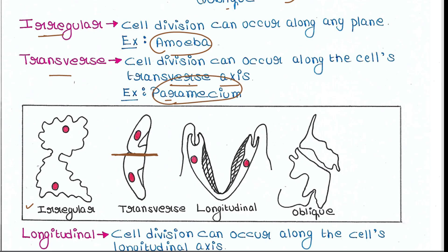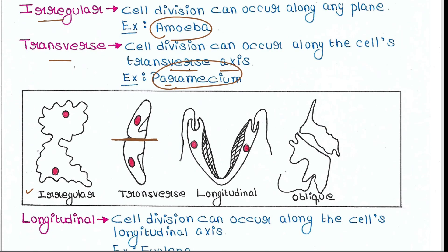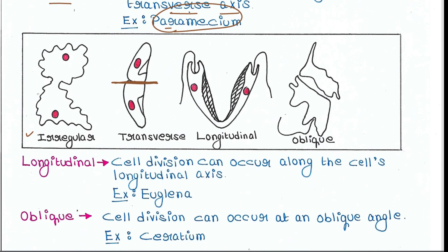Next is longitudinal binary fission. Here, cell division can occur along the cell's longitudinal axis, and one cell becomes two. The example is euglena.